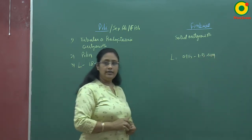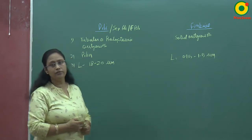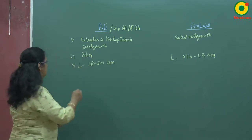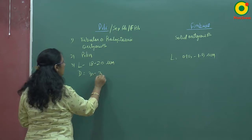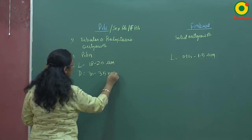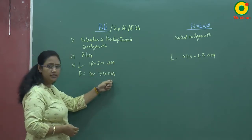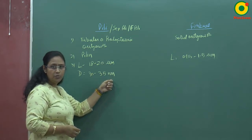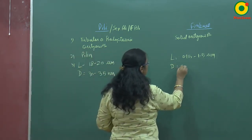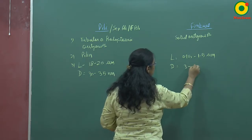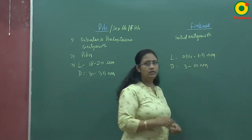Now let's see their diameter. In case of pili the diameter is 30 to 35 nanometers. Please pay attention to the units — this is nanometers. Whereas in case of fimbrae its diameter is 3 to 10 nanometers.